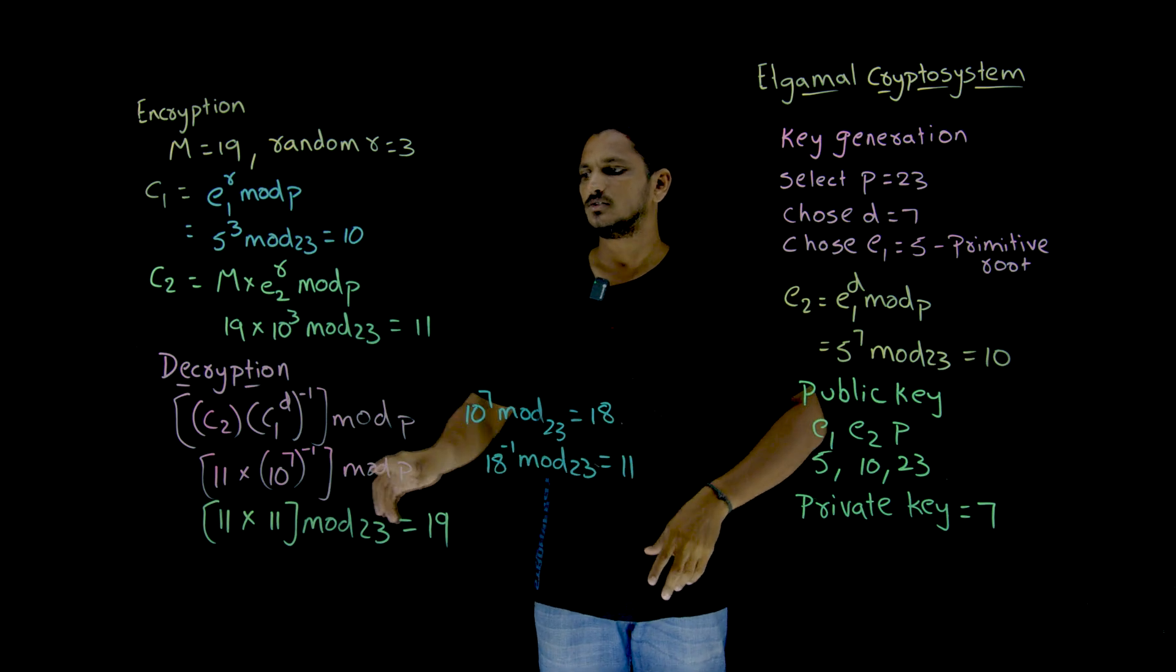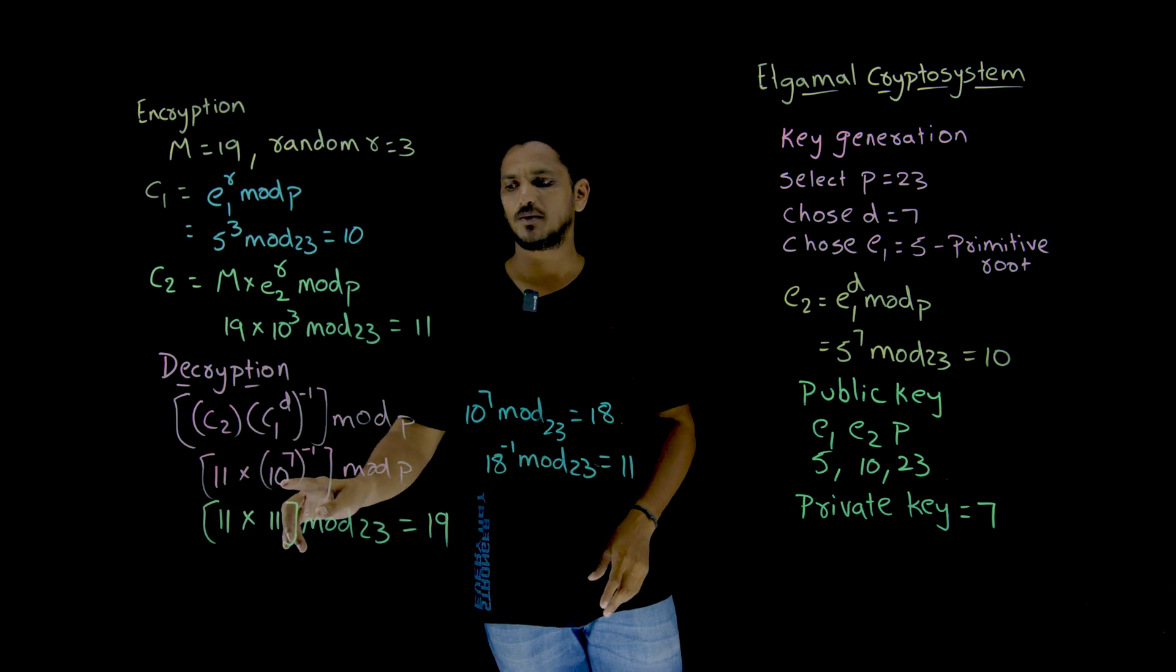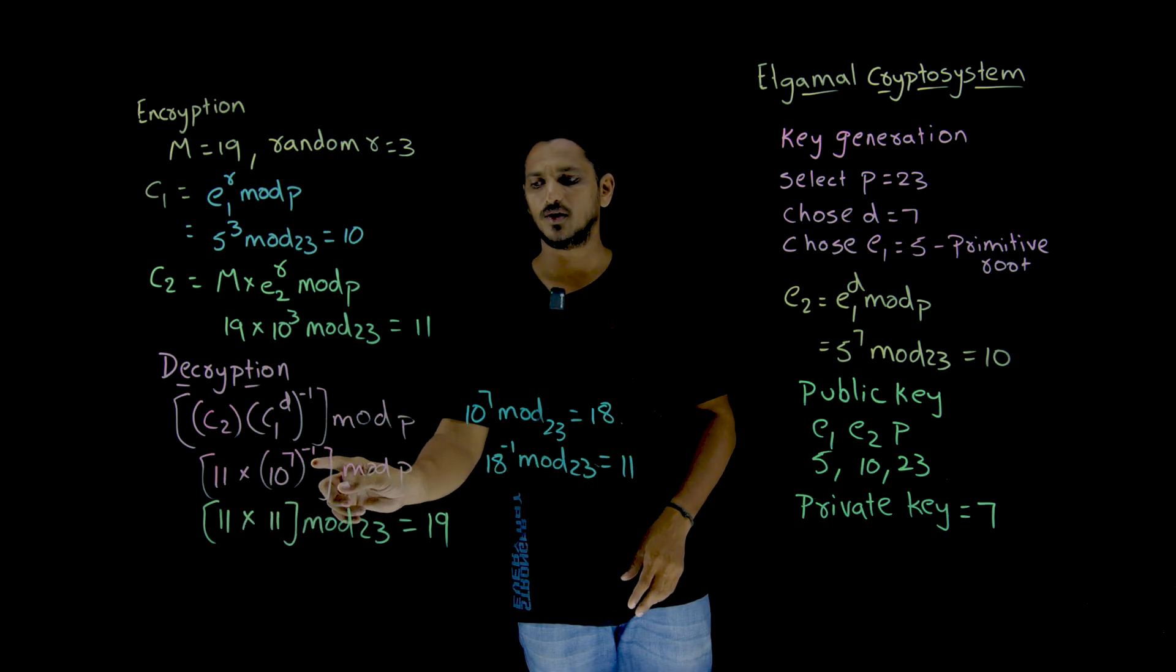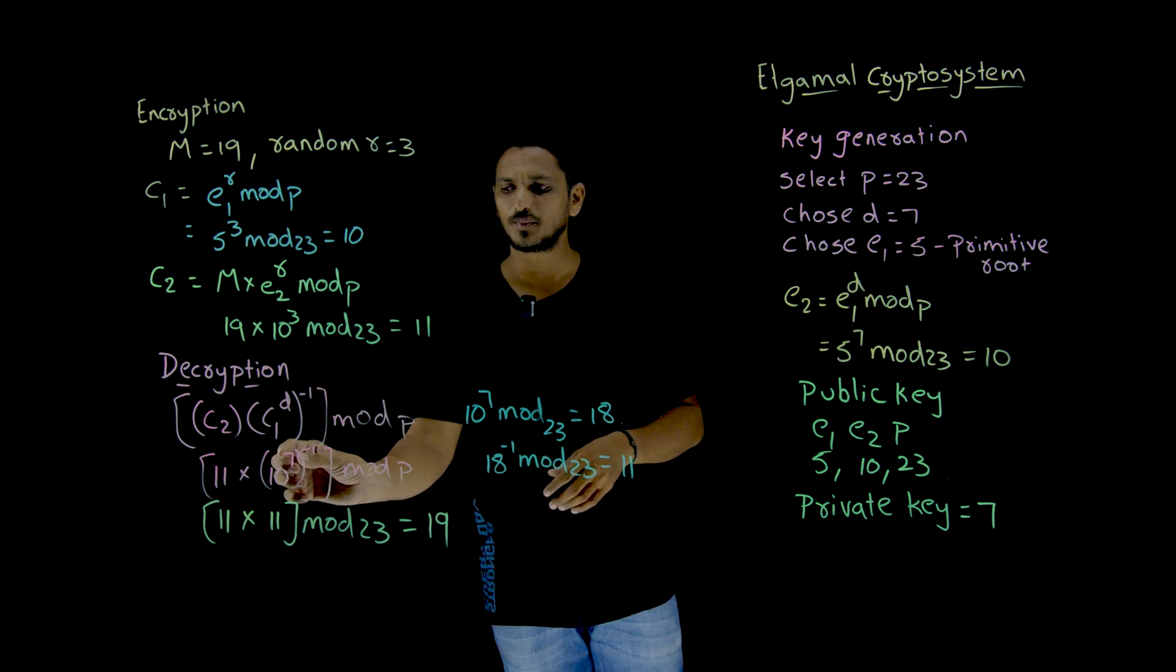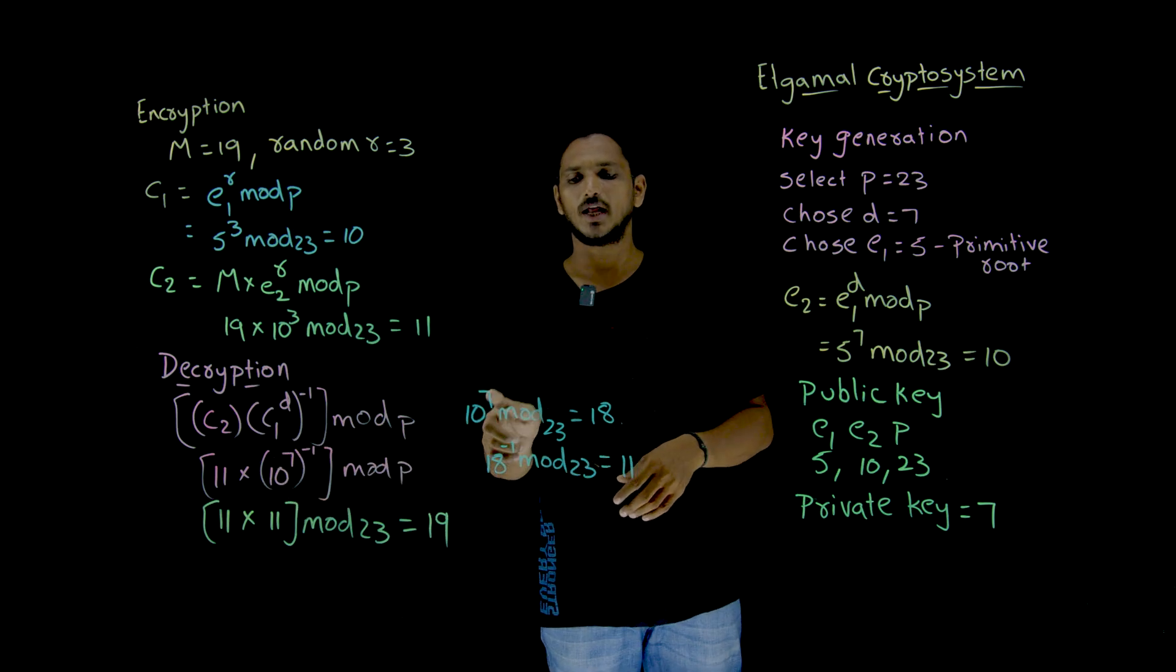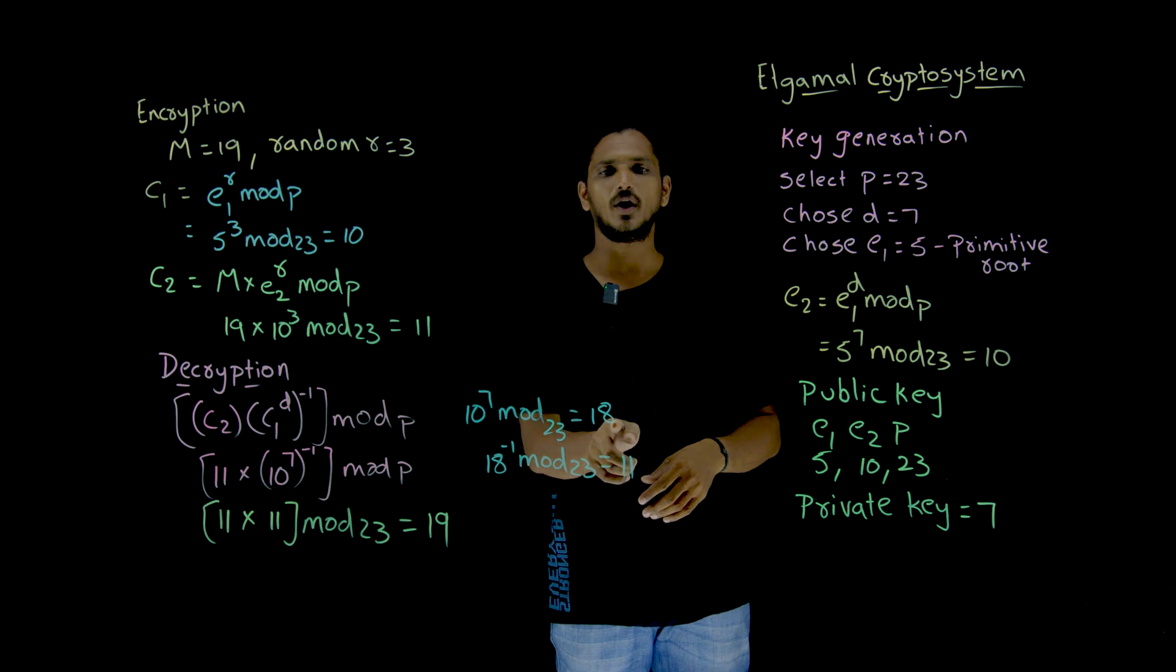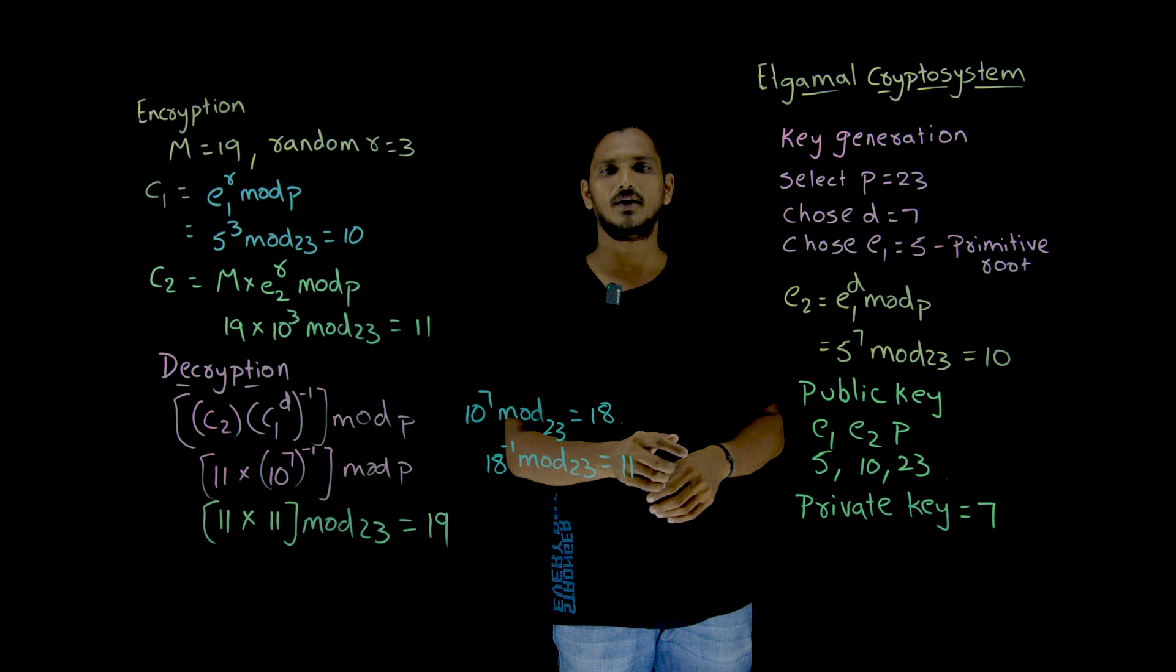So C2 means 11. 11 multiplied by 10 power 7 whole inverse mod P. So first we need to identify 10 power 7 inverse value. 10 power 7 mod 23 is equal to 18. 18 inverse mod 23 is equal to 11. Inverse of 18 is 11.